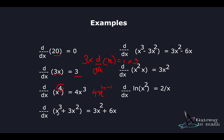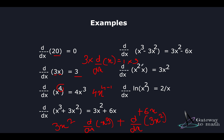Next, differentiating x^3 plus 3x^2 using the addition rule: we apply the power rule independently to each term. The derivative of x^3 is 3x^2 and the derivative of 3x^2 is 6x, giving 3x^2 plus 6x. Subtraction is very similar to addition — we just replace the sign with a negative value.